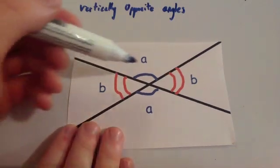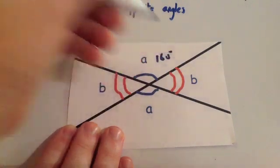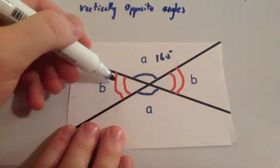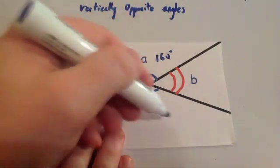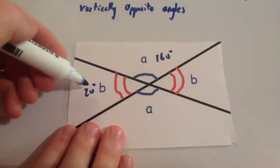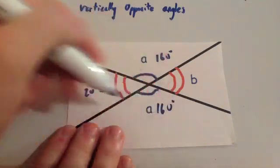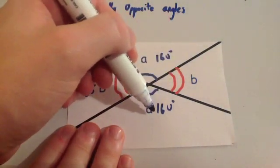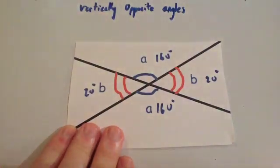That can be shown quite easily. For instance, if this here was 160 degrees, then because it's a straight line, this would be 20 degrees. Then because these two are in a straight line and that one's 20, well this one must be 160 degrees. And finally, because this one is in a straight line with that one — if that's 160, this needs to be 20. So it makes sense using basic angle properties.